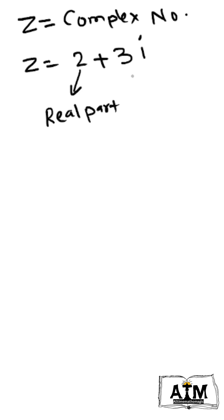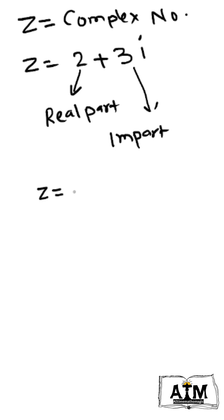And 3i is called the imaginary part of the complex number. Thus a complex number has two parts: one is the real part and another is the imaginary part.